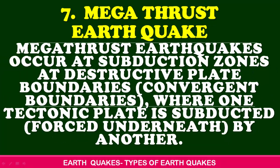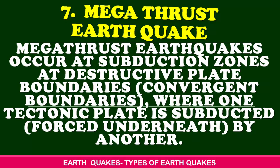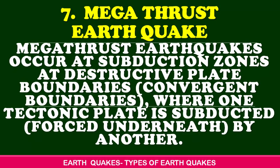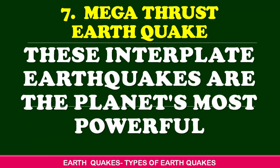7. Megathrust Earthquake: Megathrust earthquakes occur at subduction zones at destructive plate boundaries — that is, convergent boundaries where one tectonic plate is forced underneath another. These are the planet's most powerful earthquakes.